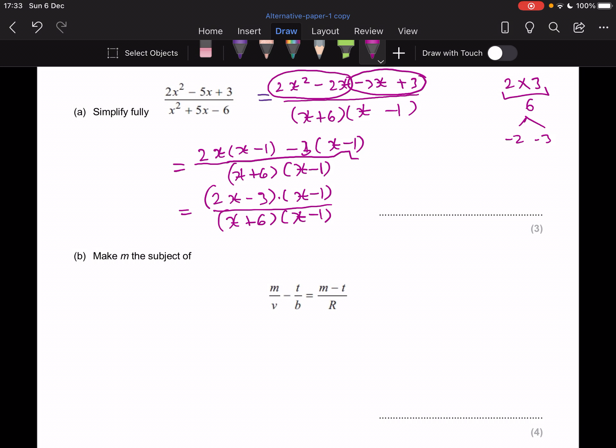So we can simplify now because there is a multiplication sign between those brackets, so we can simplify. So they're identical. We cross them out. So what we're left with is (2x minus 3) over (x plus 6). So that was part A.